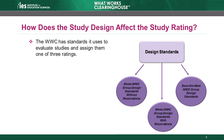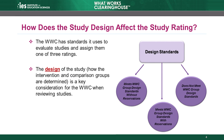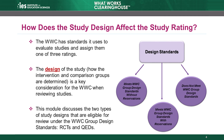The WWC uses a set of standards to evaluate education research studies and assign them one of three ratings. The highest rating a group design study can receive is meets WWC group design standards without reservations. A study can also meet WWC group design standards with reservations. Finally, some studies do not meet WWC group design standards. The design of the study — how the intervention and comparison groups are determined — is a key consideration for the WWC when reviewing studies. There are two designs that are eligible for review under the WWC group design standards: RCTs and QEDs.